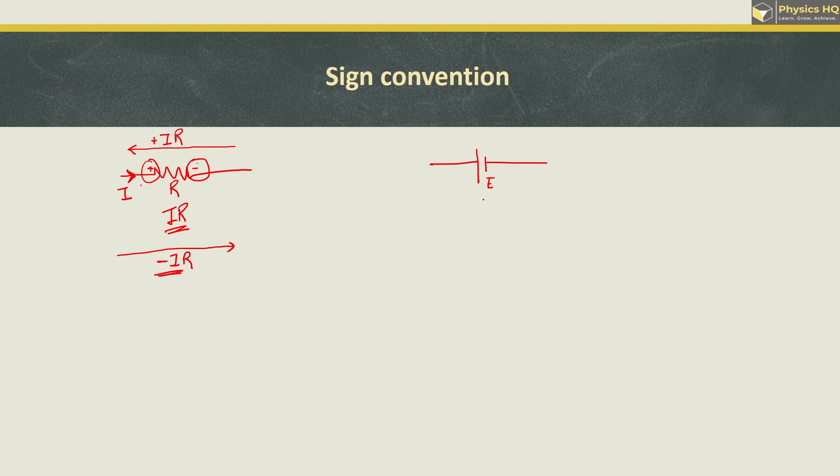Likewise, EMF will be plus E or minus E depending on which direction you trace the loop. Again, look at the second sign. When we go left to right, the second sign is minus, the negative terminal, so we take minus E. When we trace the loop in this direction, the second sign is positive, so we take plus E. I hope you understand.